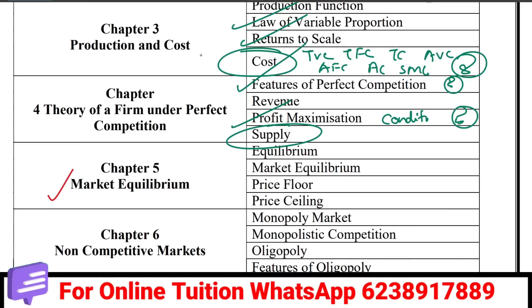If you look at the graph on profit maximization, you will find the profit maximization condition. If you look at the graph in the market, you will find the shutdown point or break-even point.